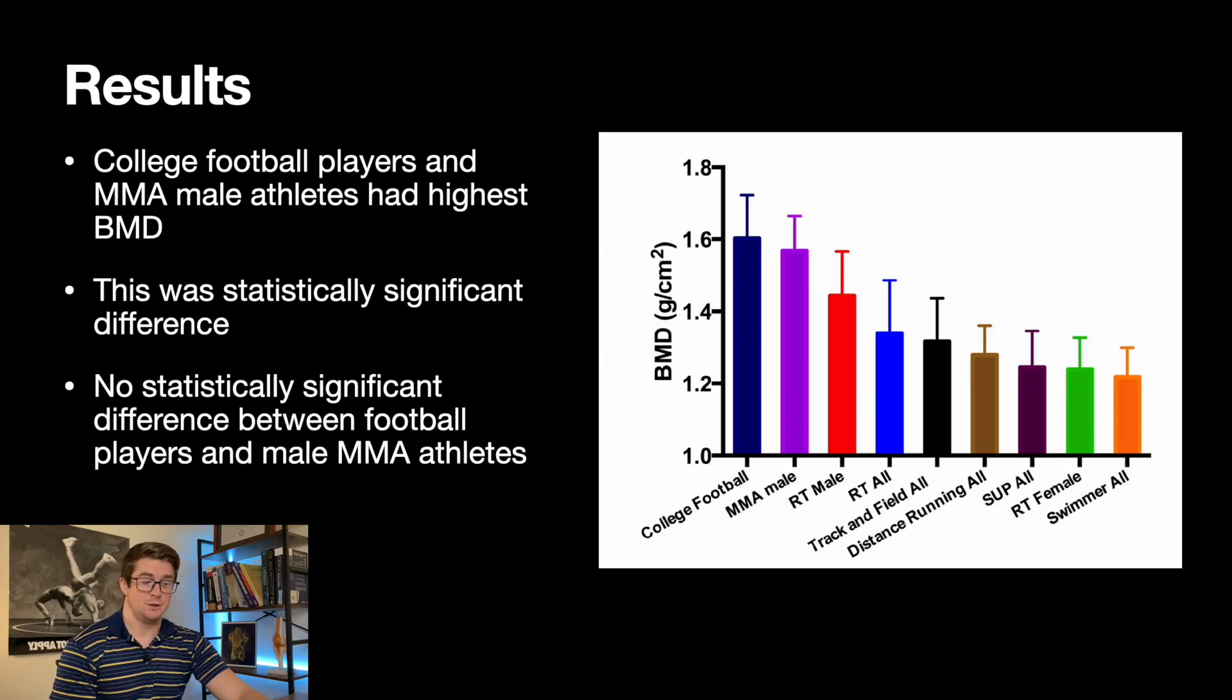But the two, the only statistically significant difference were college football players and then MMA athletes having the highest bone mineral density compared to the other groups. So super interesting. The only ones that have really high impactful movements in their sport, meaning they're getting hit multidirectionally with high strains and high magnitudes. So this was the only statistically significant difference. And there was not a statistically significant difference between football players and MMA athletes, although the football playing group was a little bit, despite it being the biggest group, was a little bit higher.